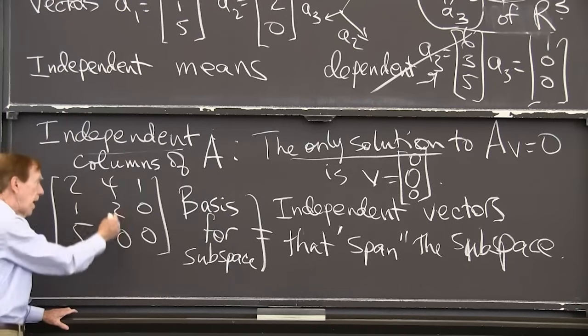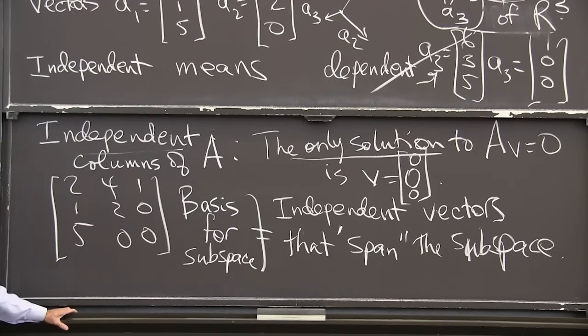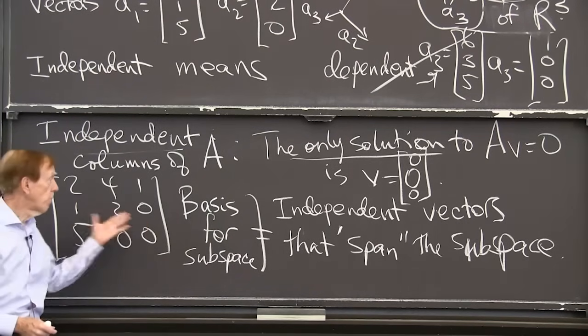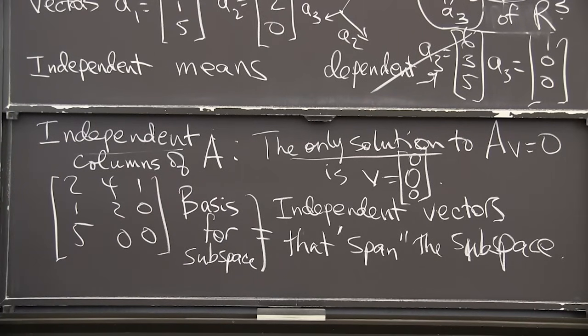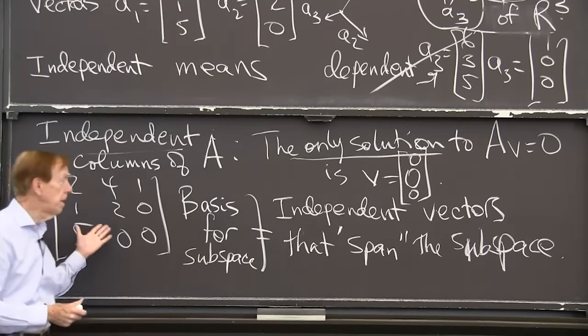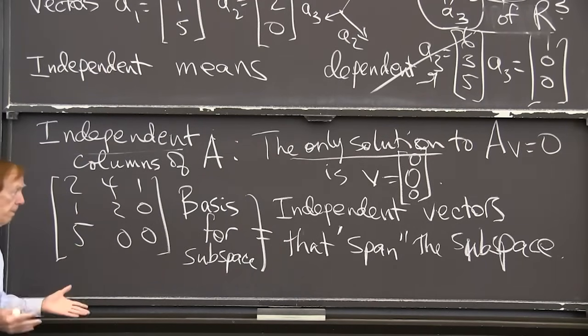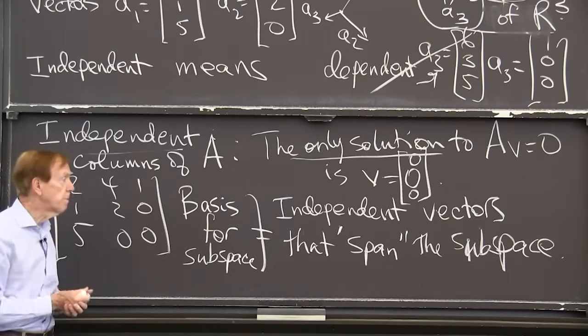except to take 0 of that, 0 of that, and 0 of that. Basis. So those are a basis for the column space, because they're independent and their combinations give the whole column space.